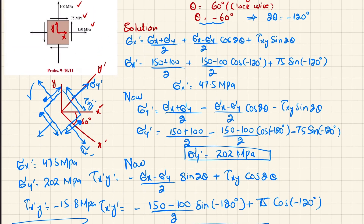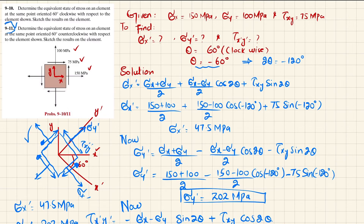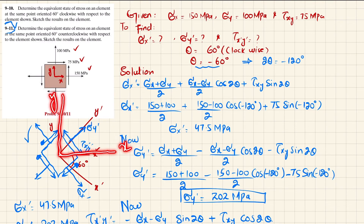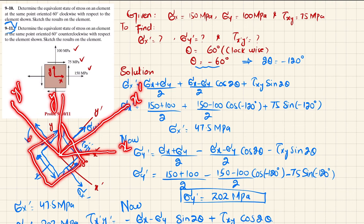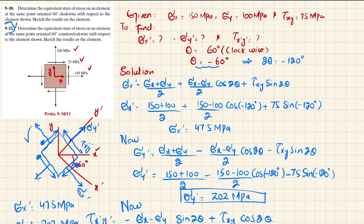I hope you enjoyed this video. Thank you for watching and supporting me. You can solve problem 9-11 by yourself using the same procedure. Note that here theta is 60 degrees counterclockwise, so theta will be plus 60 degrees and 2theta will become plus 120 degrees. The new x dash and y dash axes and the element will be oriented accordingly.